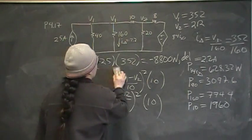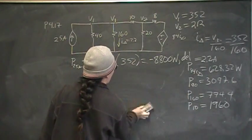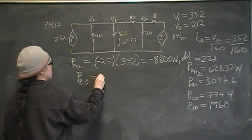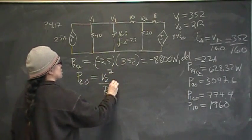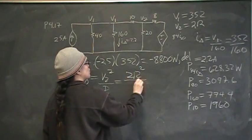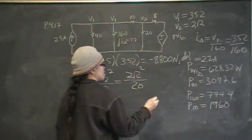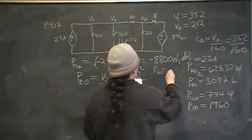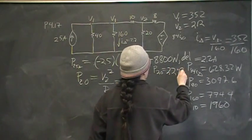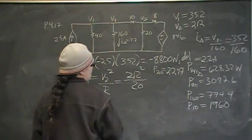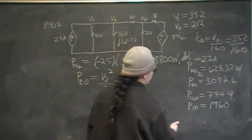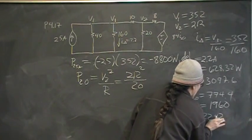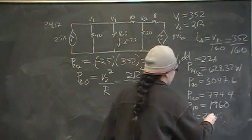And now we need the 20 power of the 20 ohm resistor. So for P of 20 we'll do V2 squared over R. V2 is 212. 212 squared over 20. And we should come up with P20 is equal to 2247.2.